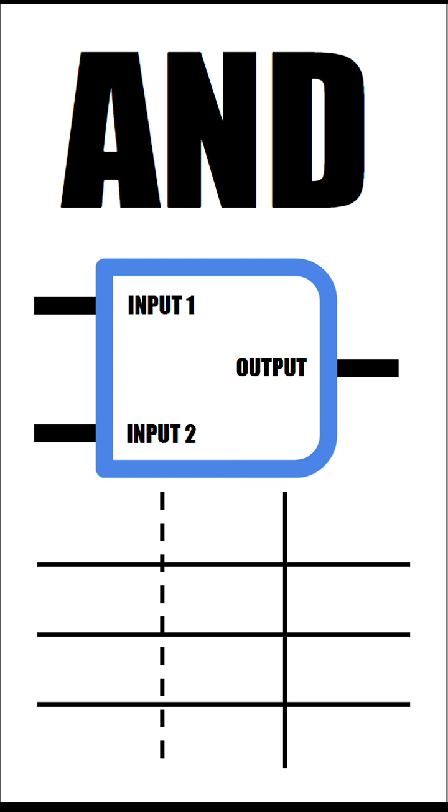Having two inputs, the truth table has four possible input combinations: 11, 01, 10, and 00. The AND gate only turns on when both of its inputs are on, meaning that our first row will have a one as the output and the rest will simply have a zero.